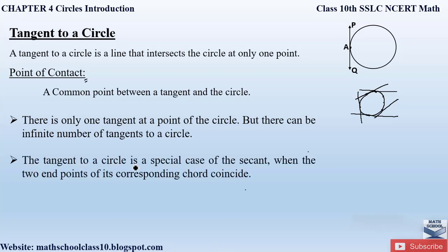The tangent to a circle is a special case of a secant when the two endpoints of the corresponding chord coincide. In the case of a secant, the line intersects the circle at two common points A and B. When these points A and B coincide at a single point, a tangent is formed. So a tangent is a special case of a secant where two corresponding points coincide at a single point.